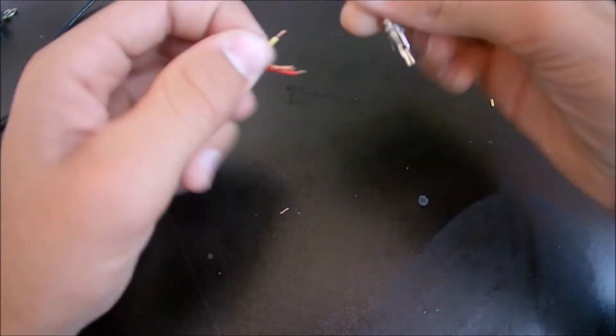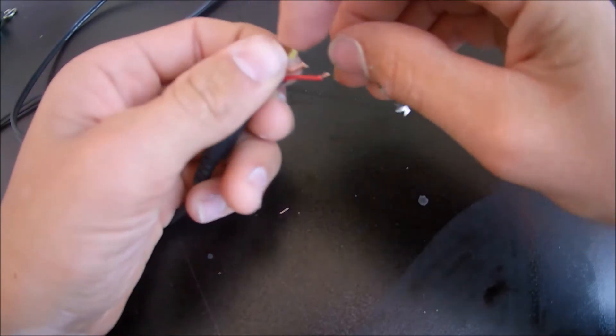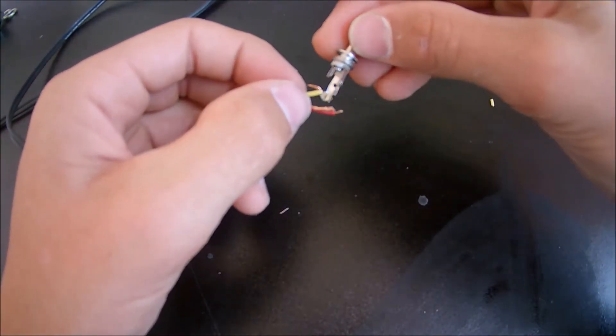So, first twist the copper strands of the wires, so that they are uniform, so that there are no copper strands that could cause a short.